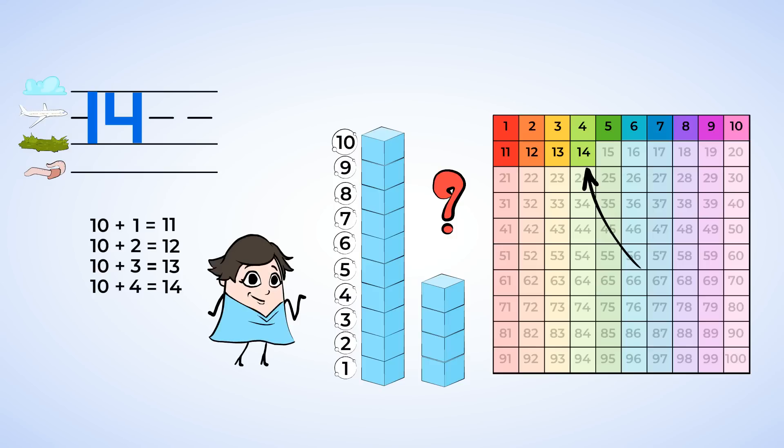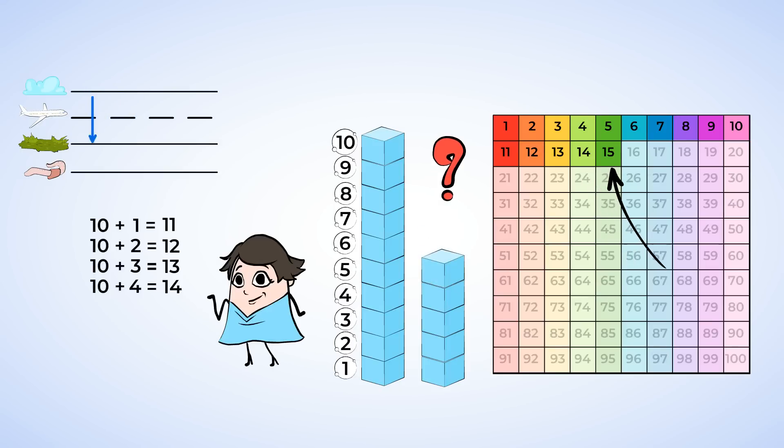We just built our tower up to 4 blocks. But now we have a tower of 5. Now let's write the number. Start with the 1, then the 5. Down and around with a hat on top. Now we have a 1 and a 5 next to each other. And that is the number 15. 10 and 5 make 15.